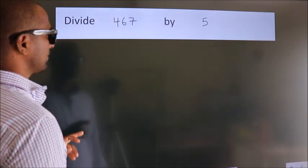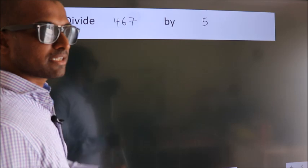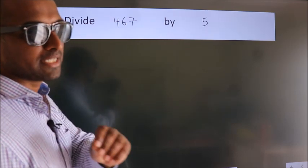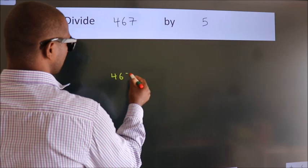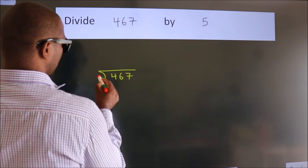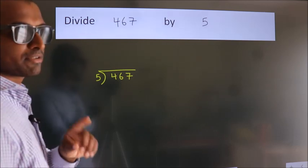Divide 467 by 5. To do this division, we should frame it in this way. 467 here, 5 here. This is your step 1.